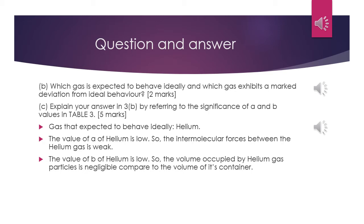The answer for question B: the gas expected to behave ideally is helium. The reason (question C) is that the value of A for helium is low, so the intermolecular forces between helium gas molecules are weak. Also, the value of B for helium is low, so the volume occupied by helium gas particles is negligible compared to the volume of its container. Both reasons satisfy ideal gas behaviour conditions.